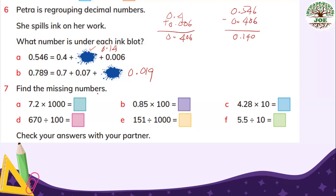Number 7. The missing numbers. 7.2 times 1,000. So this is. 3.0. 7.2 times 1,000. Three places larger. So 7.2 becomes 7,200. 0.85 times 100. 2 places larger. So 85.